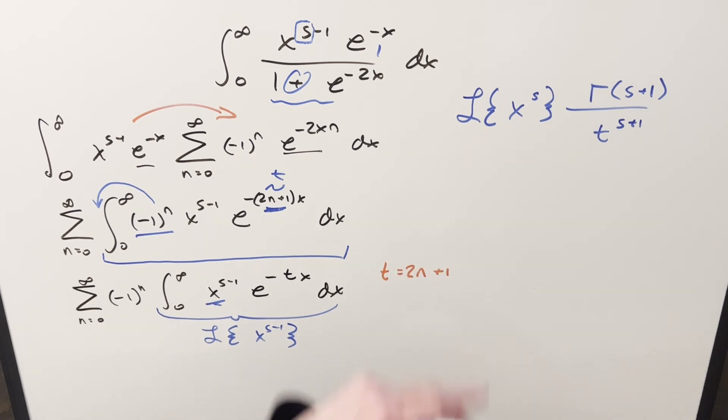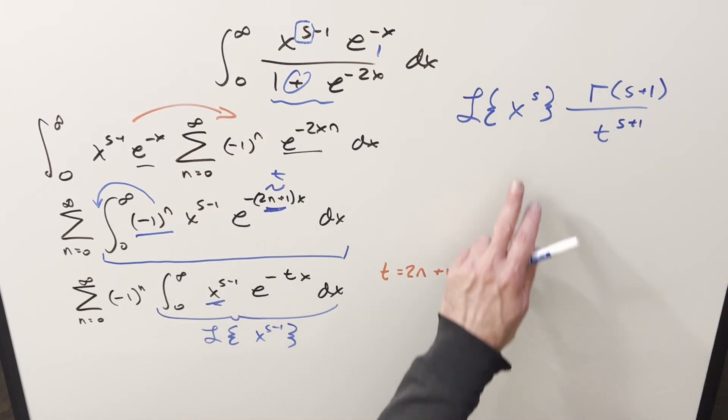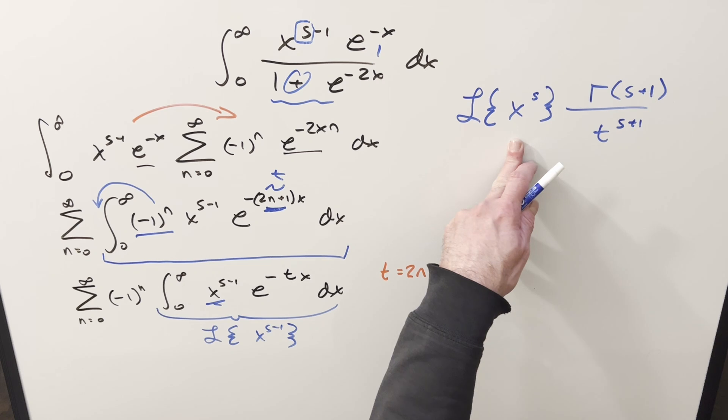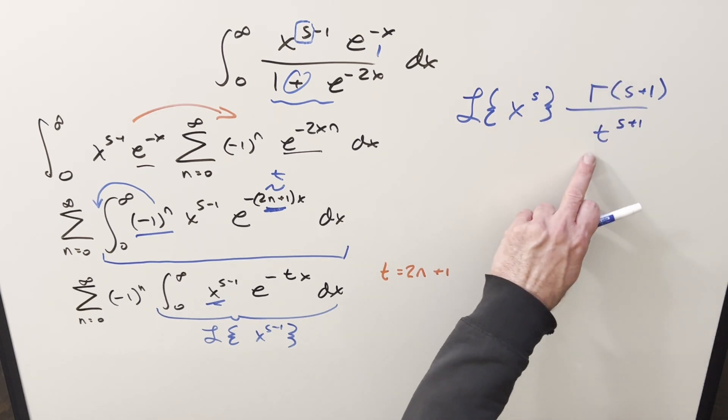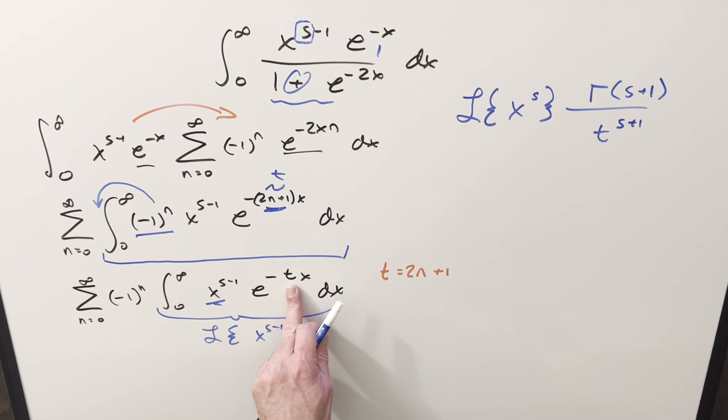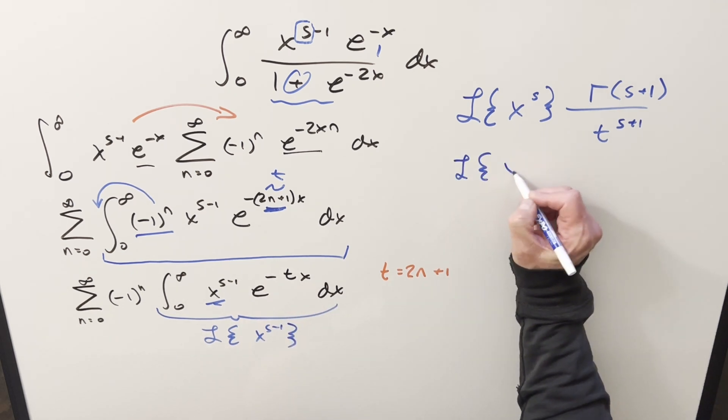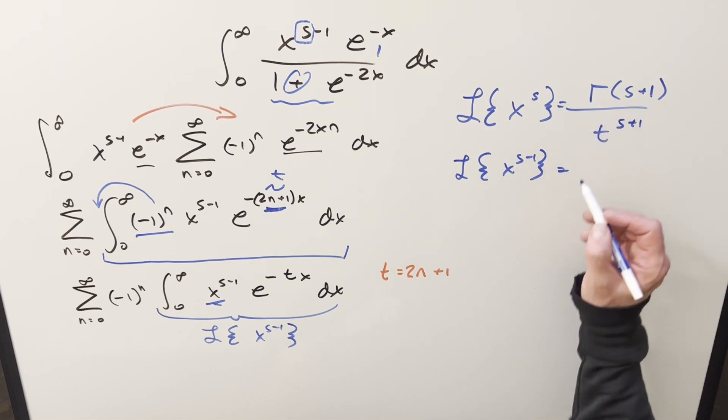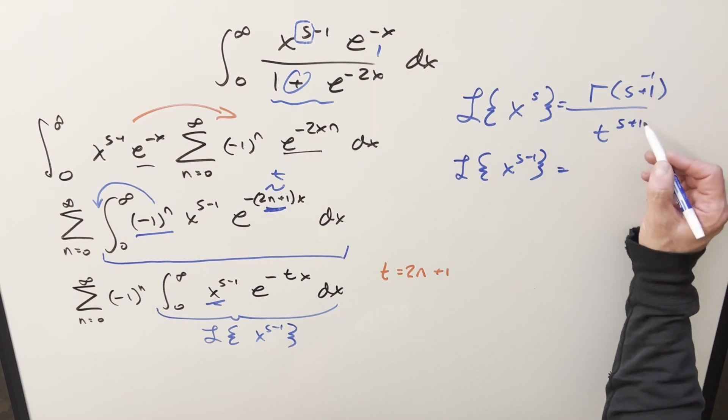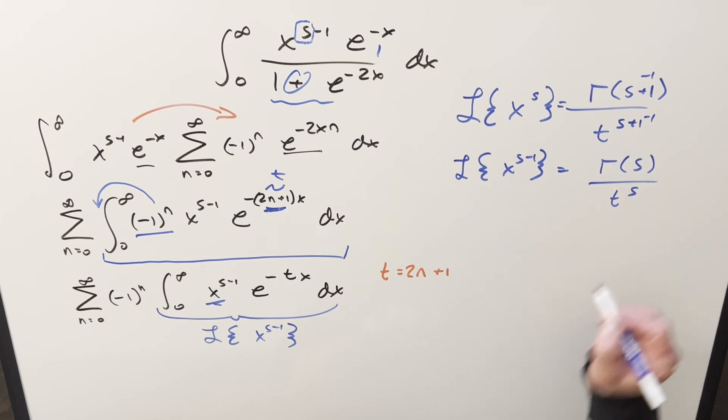Now for our Laplace transform of this form, we have this formula. I switched the variables around. I know the variables are kind of confusing. Sorry, I should have probably changed it in the beginning. But writing it with the variables the way we have it, our formula for something like Laplace of x to the s is going to be gamma of s plus 1 over t to the s plus 1, because t is going to be our input here. So if what we're looking at here is Laplace of x to the s minus 1, we just need to adjust this. So everything should be 1 less here. So this is just going to be gamma of s over t to the s.